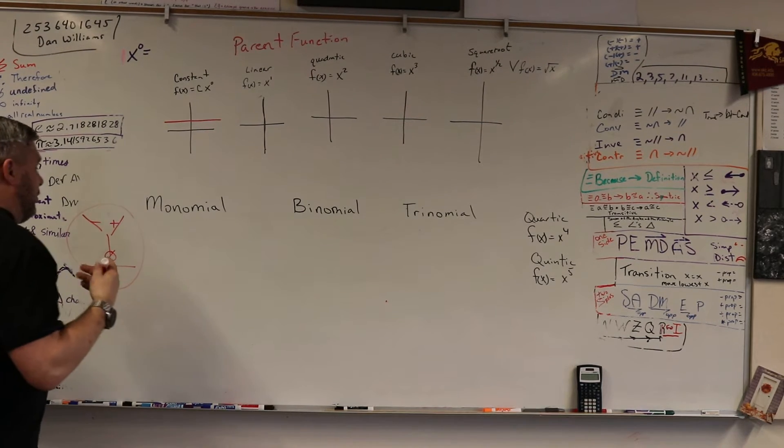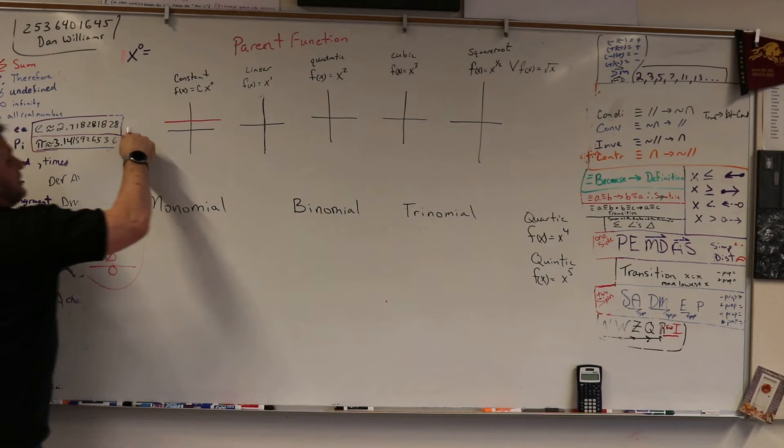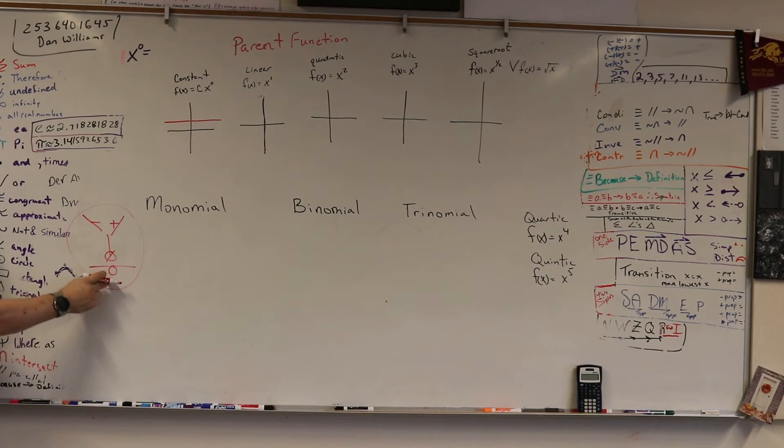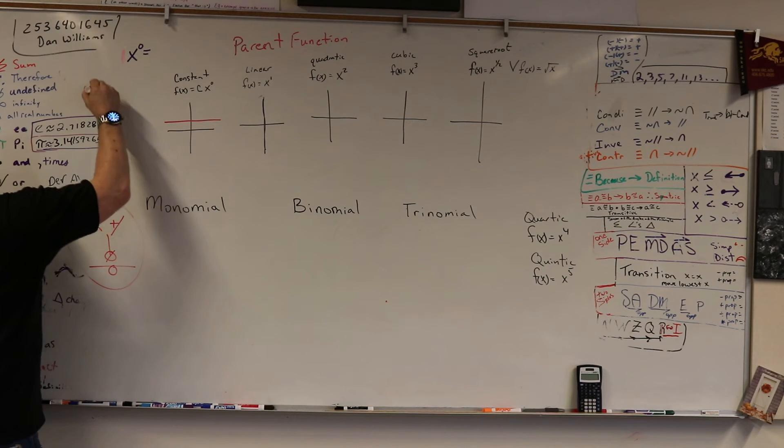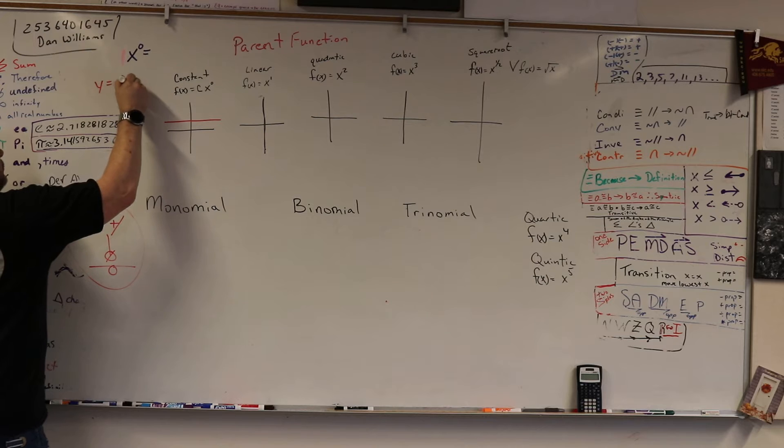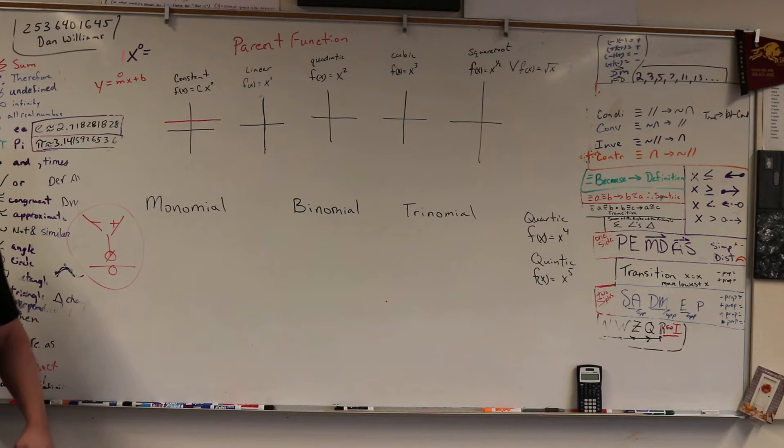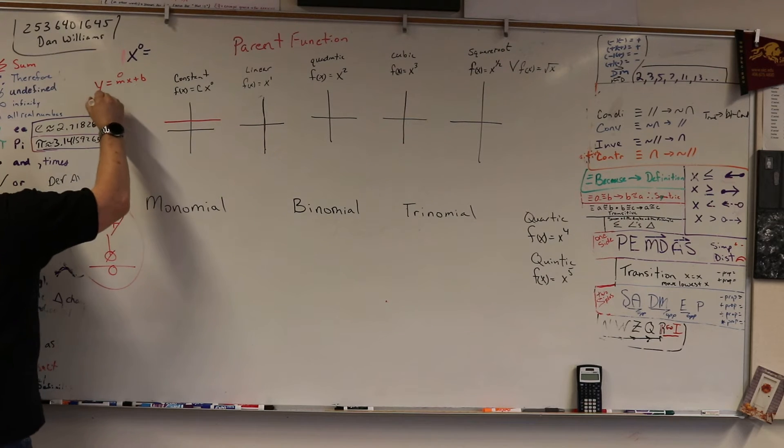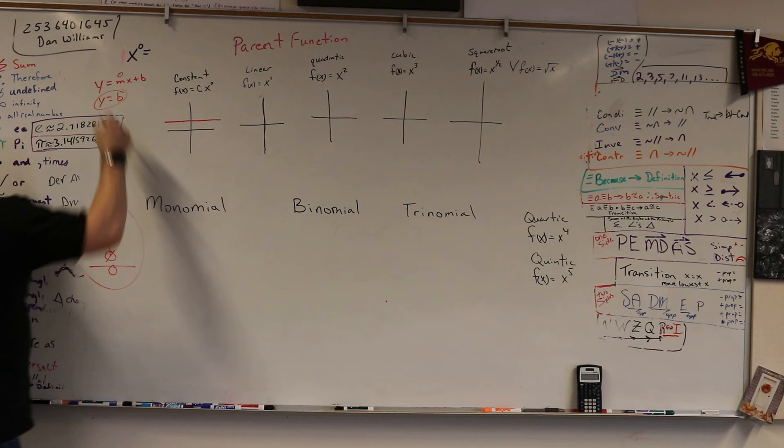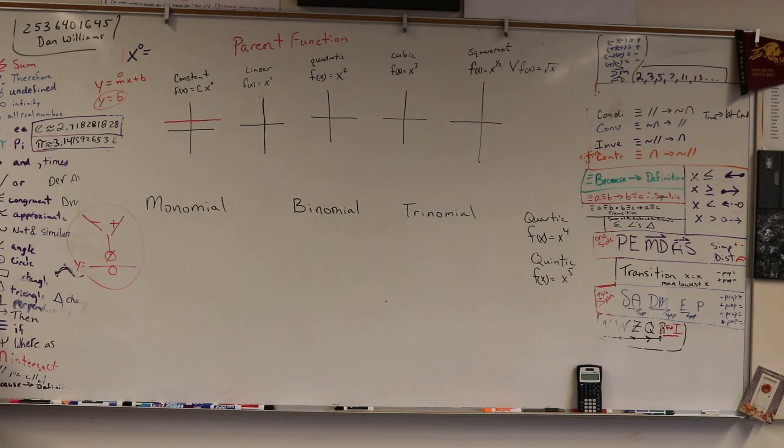So you need to remember that this constant is that zero slope. It's when y equals mx plus b, and the m is zero, and there is no x, and all there is is b, so y equals b. That is a constant. So it's always going to look like the line, the mouth, right?